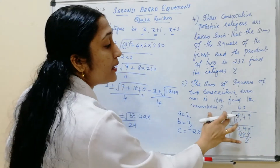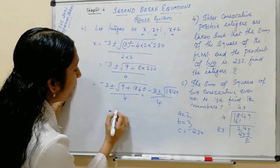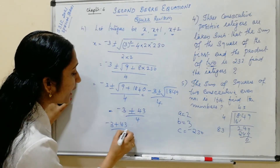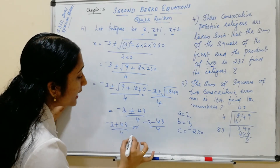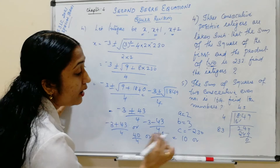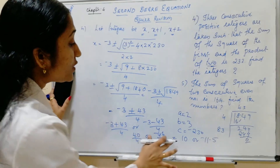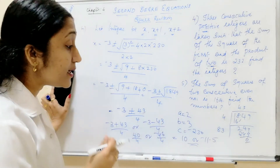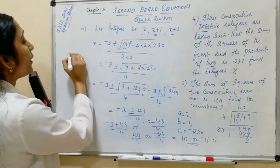The square root of 1849 equals 43. So x equals (minus 3 plus or minus 43) divided by 4. That gives x equals (minus 3 plus 43)/4 equals 40/4 equals 10, or x equals (minus 3 minus 43)/4 equals minus 46/4 equals minus 11.5. So x equals 10 or minus 11.5.